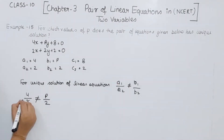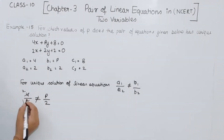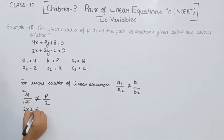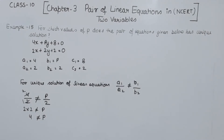This is the condition we are having. Now 4 divided by 2 gives 2, and transposing: 2 multiplied by 2 is not equal to P. So 4 is not equal to P. That means P can have any value except 4.